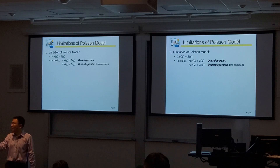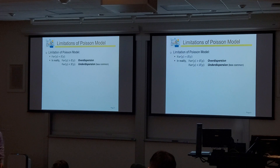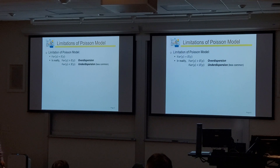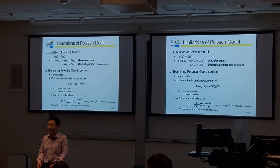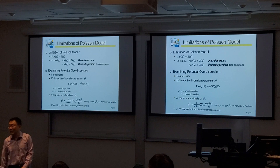If over-dispersion is present, Poisson is not appropriate, and we need to think about extending Poisson to better fit the data. There is also under-dispersion, but it's rarer. To quickly test for over-dispersion, we calculate the ratio between the variance of y and the expected value — this sigma-squared ratio. If this ratio is close to 1, Poisson is a reasonable approximation.